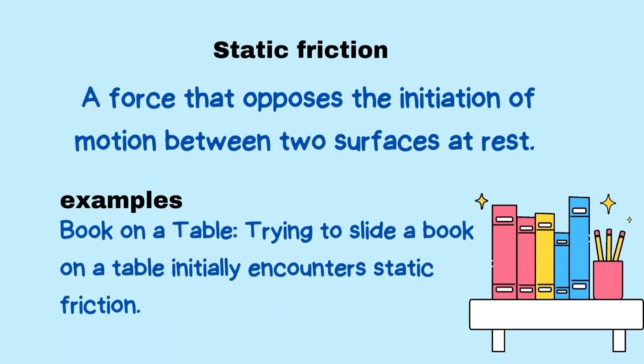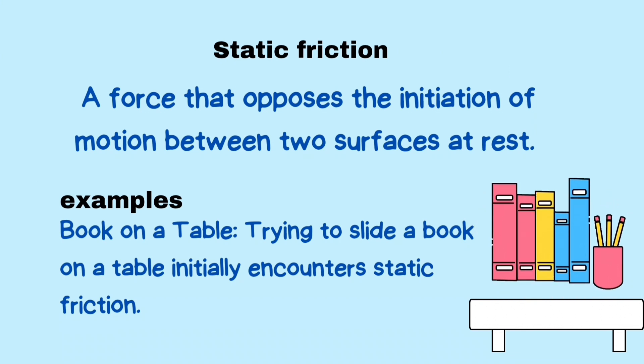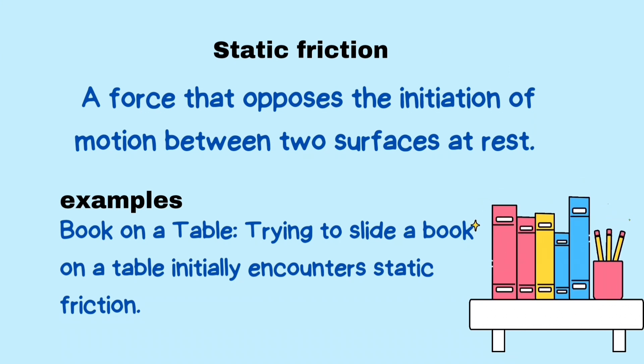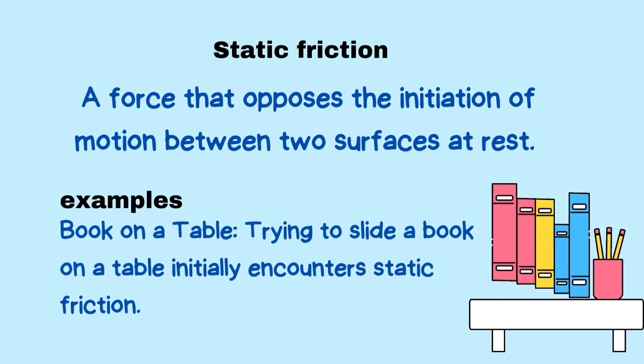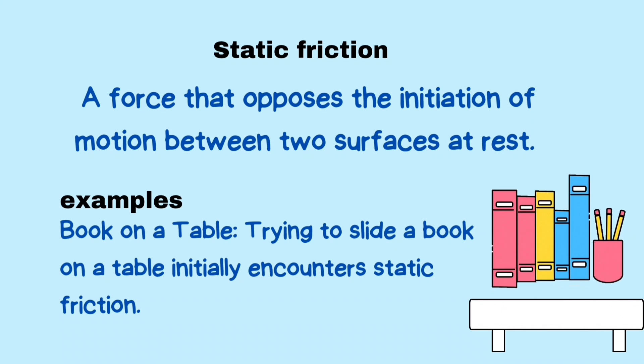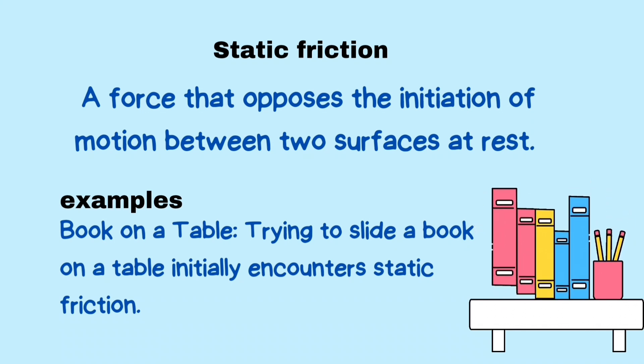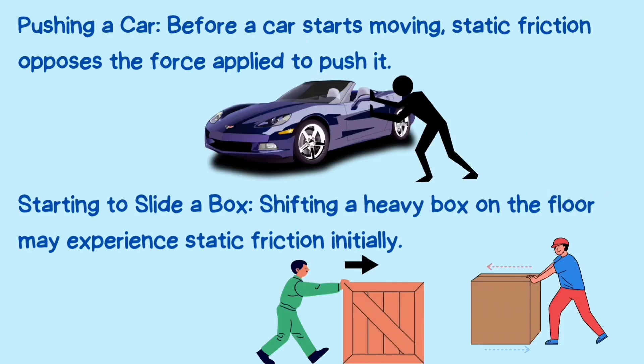Static friction is a force that opposes the initiation of motion between two surfaces at rest. Examples: sliding a book on a table initially encounters static friction. Pushing a car — before a car starts moving, static friction opposes the force applied to push it. Shifting a heavy box on the floor may also experience static friction initially.